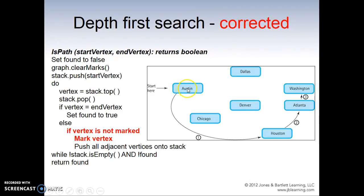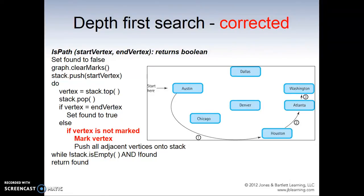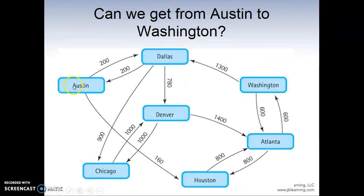Depth-first search means that you try to find the path to Washington in a manner where you're not visiting all your neighbors at once — you only visit one. And then from that neighbor, you visit only one more neighbor. From that neighbor, you visit another one until you find the destination.